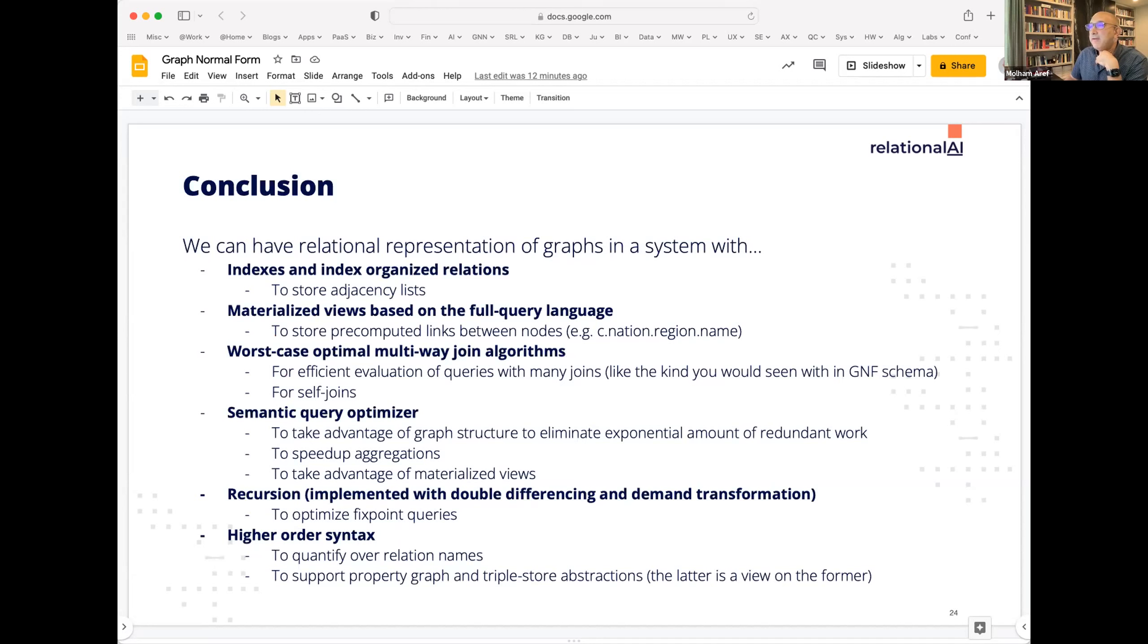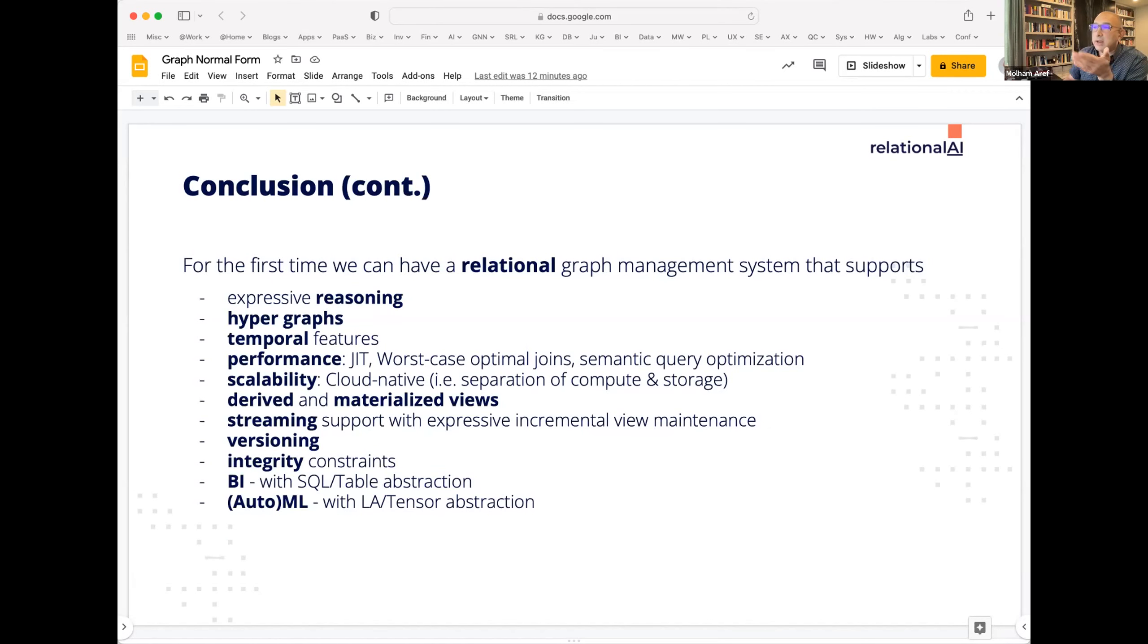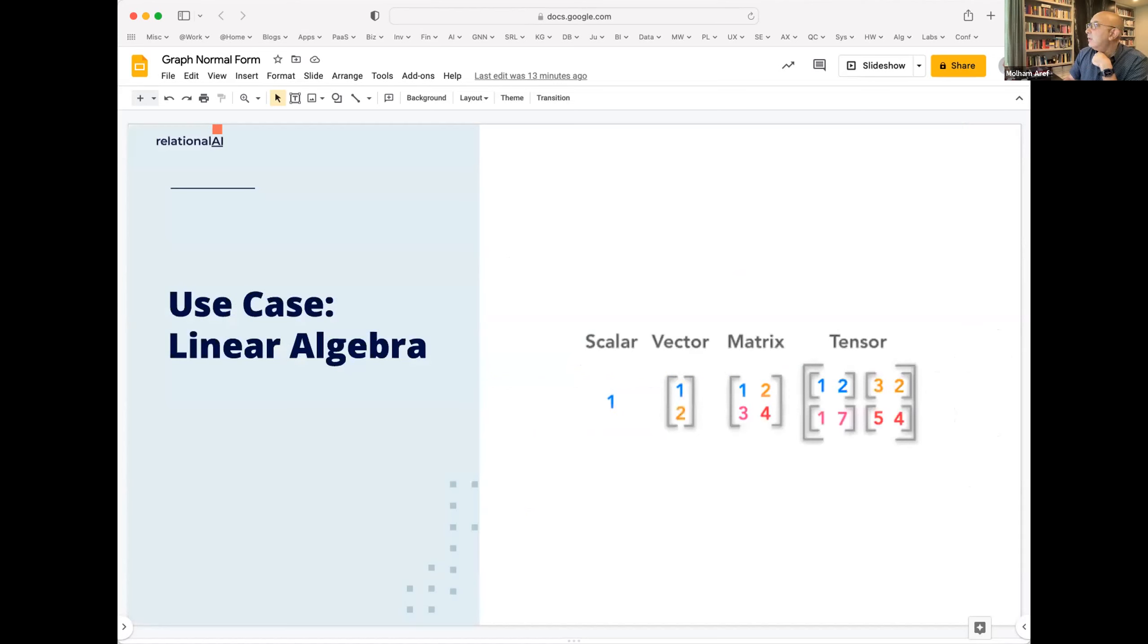So you can have this relational representation of graphs in a system that has indices that has materialized views, worst case optimal joins, semantic optimization, recursion, and a higher order syntax. And this is important. We don't have time to get into it today, but you can look for some of Martin's talks online and you can see how we use higher order syntax to quantify over relation names, because that's one of the key advantages I think that graph query languages have over SQL. You can quantify over the relation names. And you get reasoning, you get hypergraphs, temporal features. You can do it with performance.